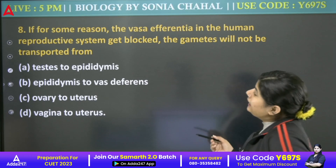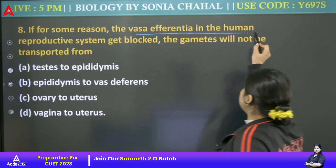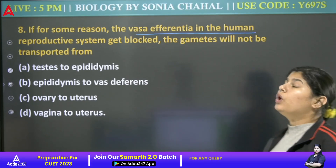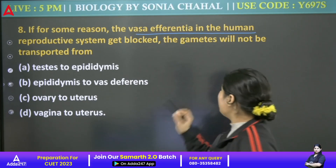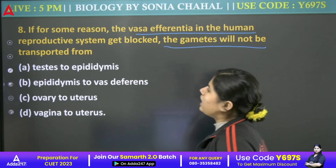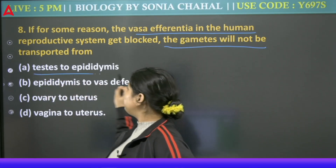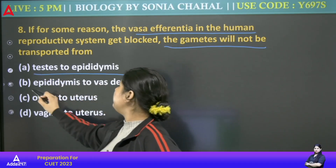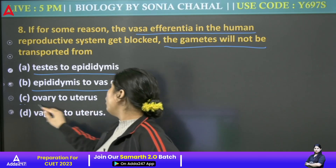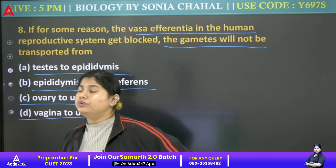Next: If for some reason the vasa deferentia in the human reproductive system got blocked, the gamete will not be transported from — testes to epididymis, epididymis to vasa deferens, ovary to uterus, or vagina to uterus?